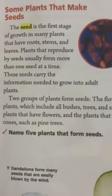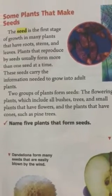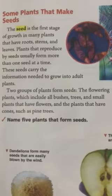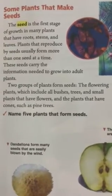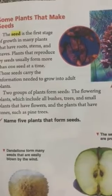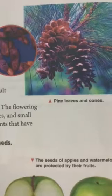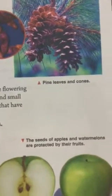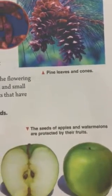Two groups of plants form seeds. The first group is flowering plants, which include all bushes, trees, and small plants that have flowers. The second group is plants that have cones, such as pine trees — they can also grow seeds. As you see, this is a pine cone. The seeds of apples and watermelons are protected by their fruits. Take a look at the pictures and see the seeds.